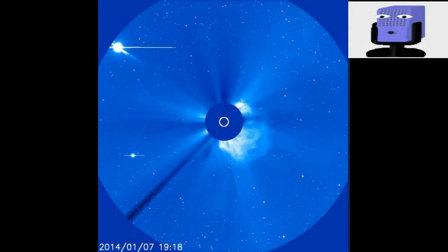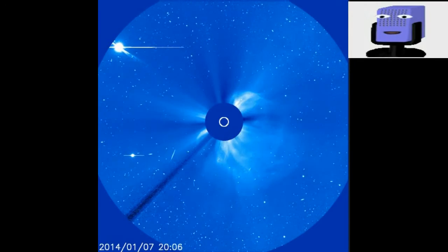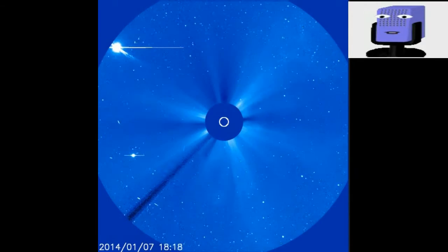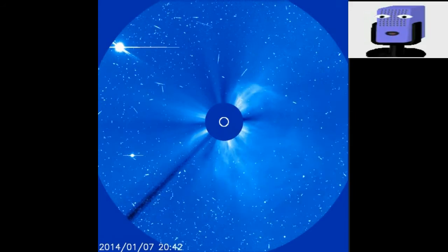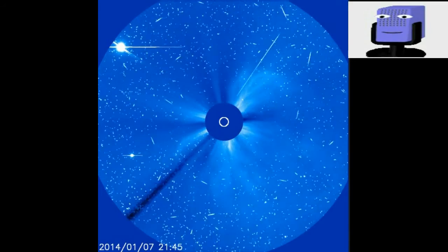So the flare CME impact, as predicted, a CME hit Earth's magnetic field on January 9th, 2014. The impact was weaker than expected, however, and it failed to produce widespread geomagnetic storms.